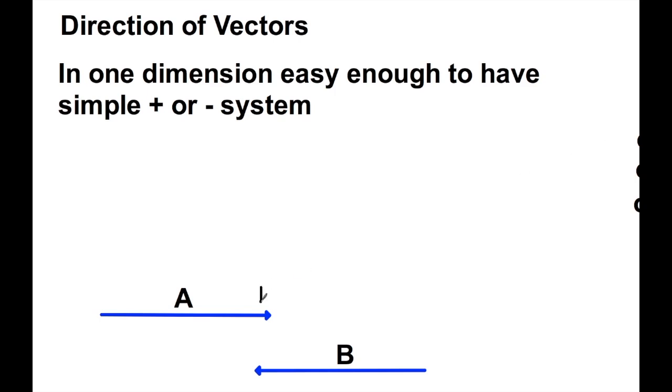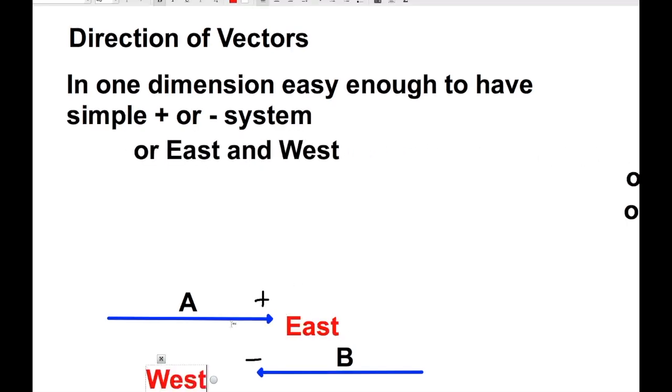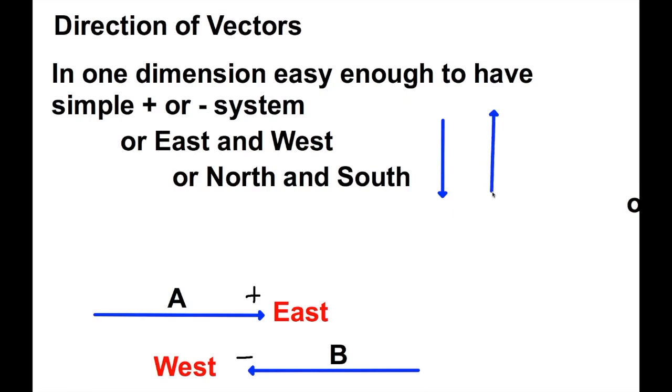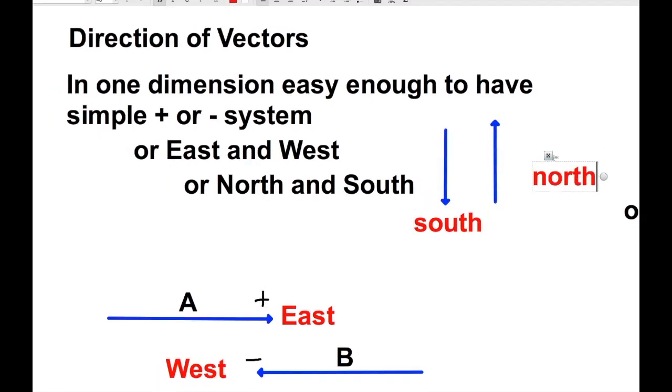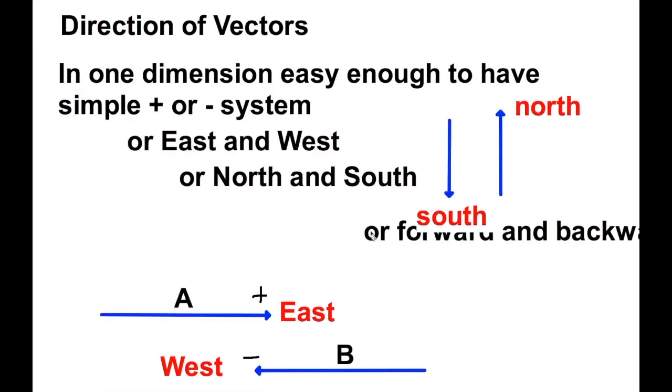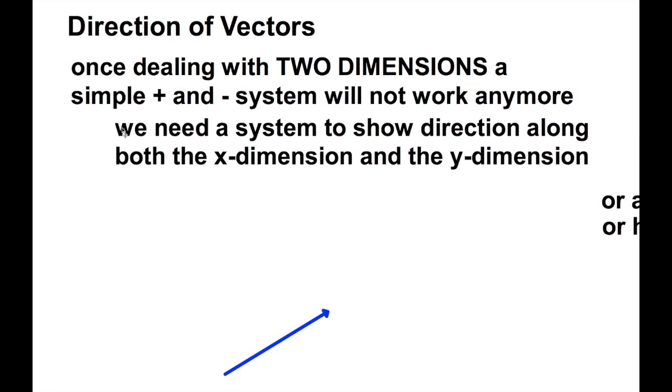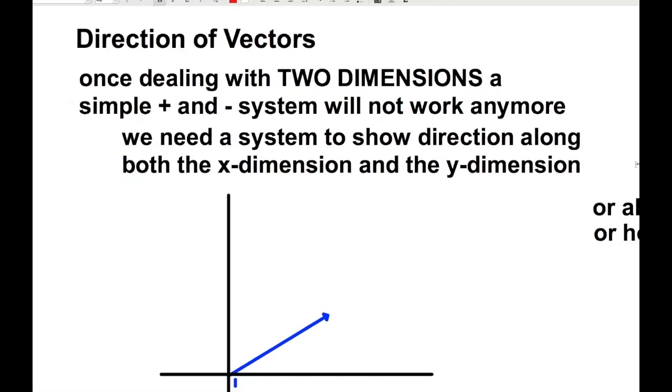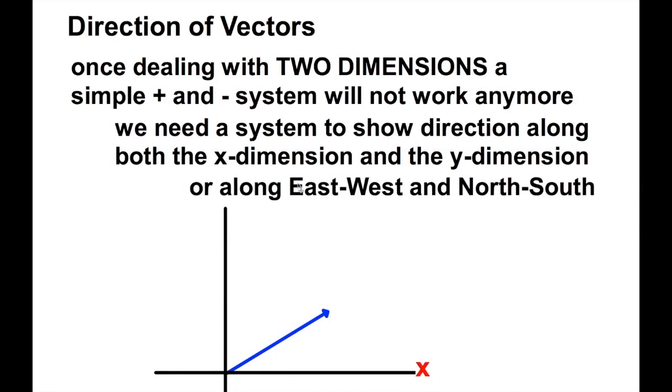Remember the easy days of one-dimensional forces, one-dimensional motion, when you could just have a simple plus or minus system, or maybe an east or a west, or maybe even a north and a south, or an up and a down? Those were the easy ways we used to look at vectors. But as we start moving into two dimensions, we're going to find out that's just not going to cut it anymore. We're going to need another system. We're going to have to look at a system that's going to show direction along both an x dimension and a y dimension. That can be done pretty easily if you put in an axis and try to look at a Cartesian coordinate system. We can have the x be horizontal and y be vertical, or whatever the two dimensions are that you choose. Later on when we do components of vectors, that's the exact system we'll be using.